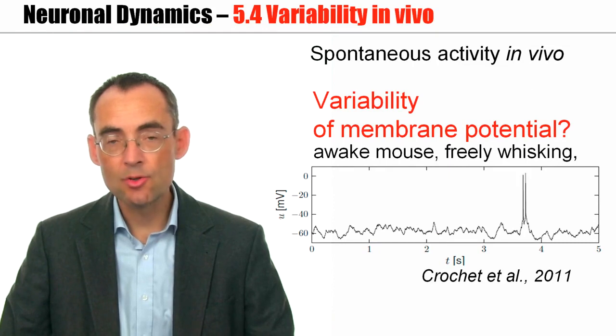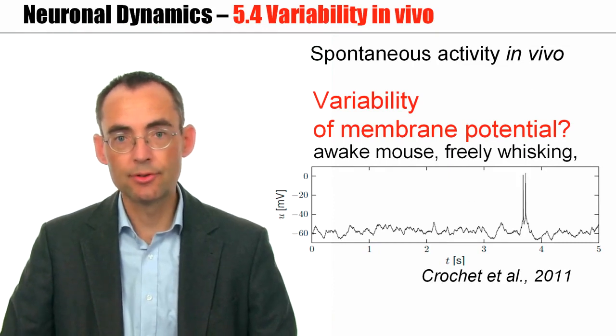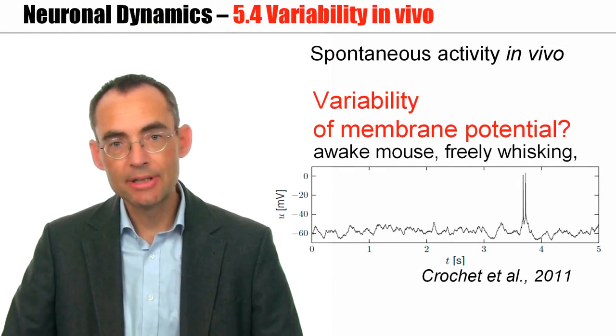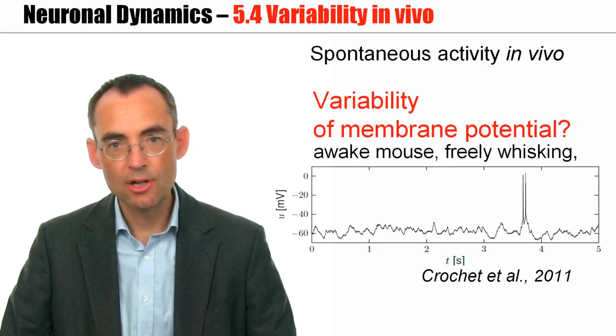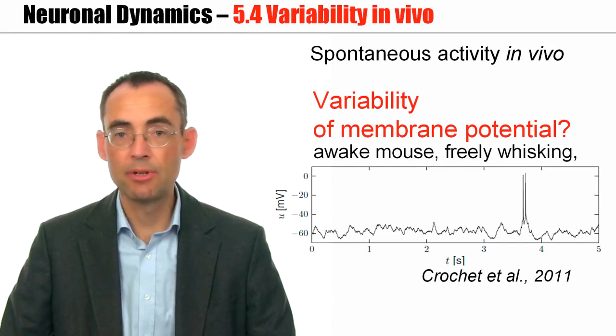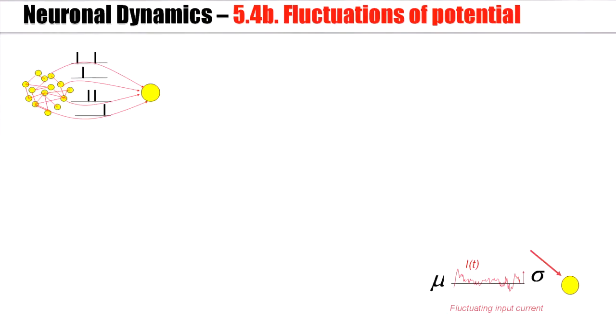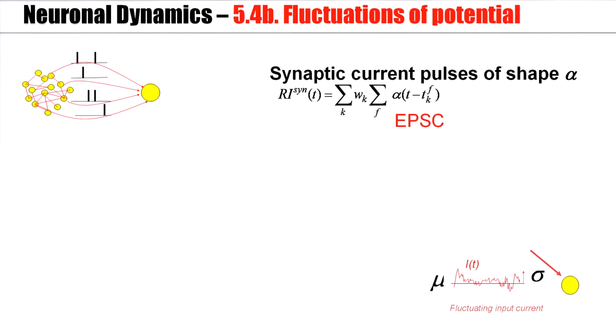Now, fluctuations of the membrane potential are indeed observed in vivo. So, it's interesting to know a little bit how these variances, the fluctuations, could possibly arise. And to do so, we develop a model. We've already seen in the previous part that synaptic current pulses caused by stochastic spike arrival add up and give rise to some current, which can be described as a mean plus a fluctuating part.